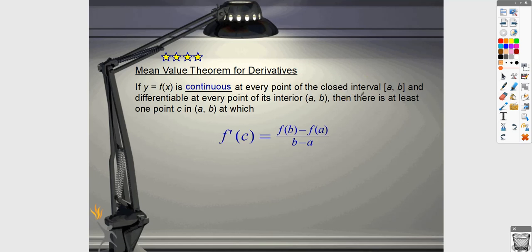So if both of those are true, then there is at least one point c in the open interval. So it cannot be happening at the endpoint. It has to be somewhere on the interior at which this is true. So the first derivative is equal to the slope between the two endpoints, which really means the instantaneous rate of change is equal to the average rate of change. So there is some point where the derivative is equal to the slope between the endpoints. That is what the Mean Value Theorem says.